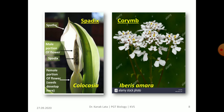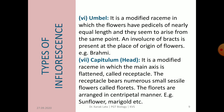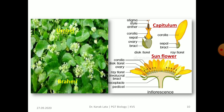Next is umbel. It is also a modified raceme in which all flowers have nearly equal length pedicels and they arise from the same point — this is the difference between umbel and corymb. A bract is present at the base of the flowers. It is seen in Brahmi. The last simple racemose inflorescence is head or capitulum. It is a modified raceme in which the main axis is flattened, called the receptacle, that bears numerous small sessile flowers called florets. The florets are arranged in centripetal manner and it is observed in sunflower and marigold. In the given figure, you may observe umbel inflorescence of Brahmi and capitulum inflorescence of sunflower.